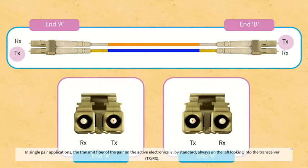In single pair applications, the transmit fiber of the pair on the active electronics is by standard always on the left looking into the transceiver transmit receive.